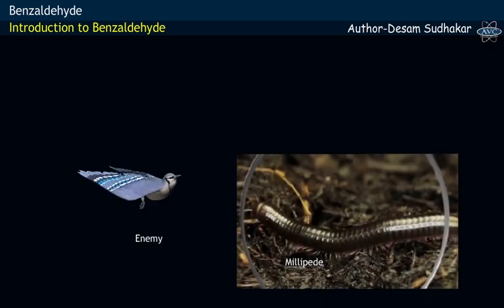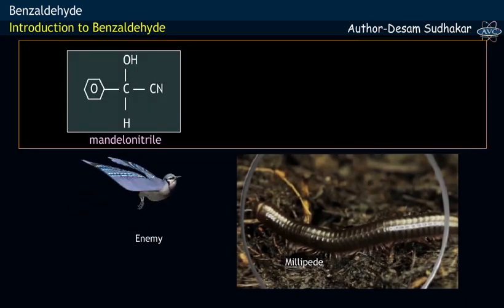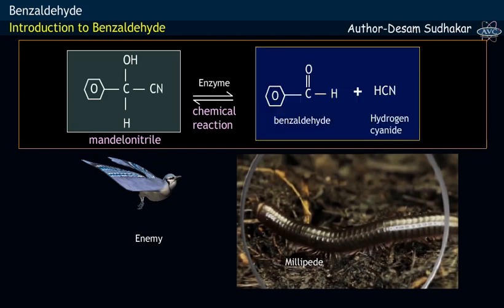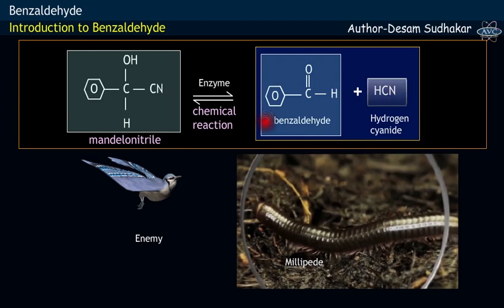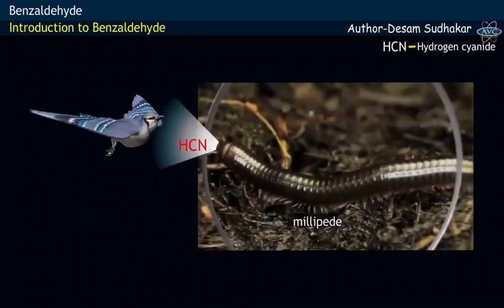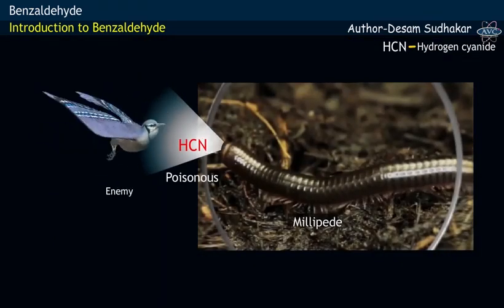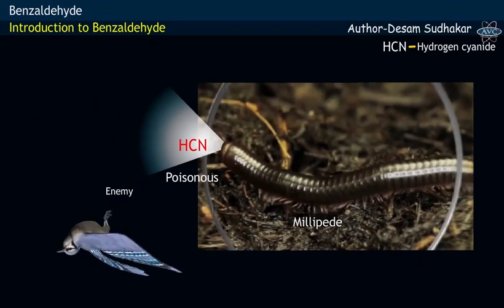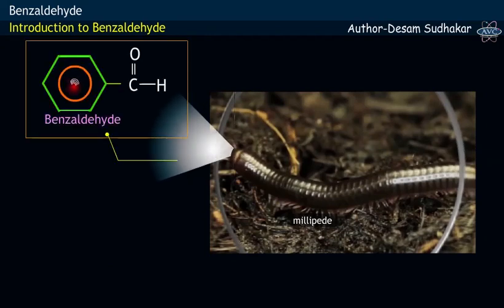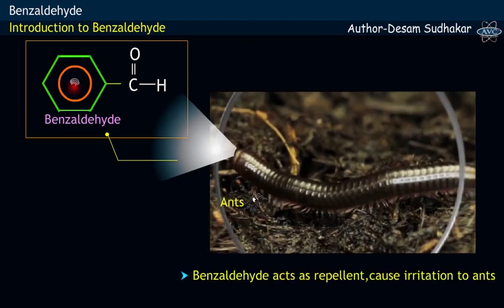When the enemy attacks the millipede, the compound mandelonitrile, with the help of an enzyme, undergoes a chemical reaction and thereby forms the products benzaldehyde and hydrogen cyanide gas. Hydrogen cyanide gas, being poisonous, kills the enemy, while the other product benzaldehyde present in the spray acts as a repellent and keeps away the approaching ants by causing irritation.